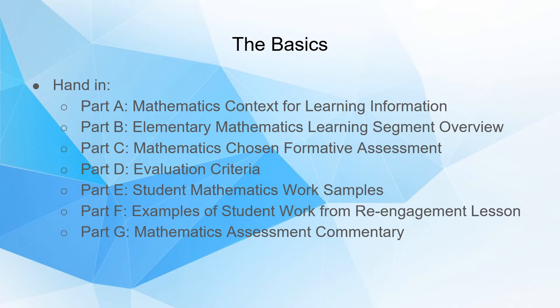This is what you're going to hand in — seven files. First, the mathematics context for learning. Second, the elementary mathematics learning segment overview, which is basically a little lesson plan chart. Third, the mathematics chosen formative assessment — just a blank copy of your assessment. Fourth, evaluation criteria: how you scored your assessment when you graded it. Fifth, your three work samples is Part E. Part F is the three work samples from the re-engagement lesson. And then Part G is the assessment commentary.